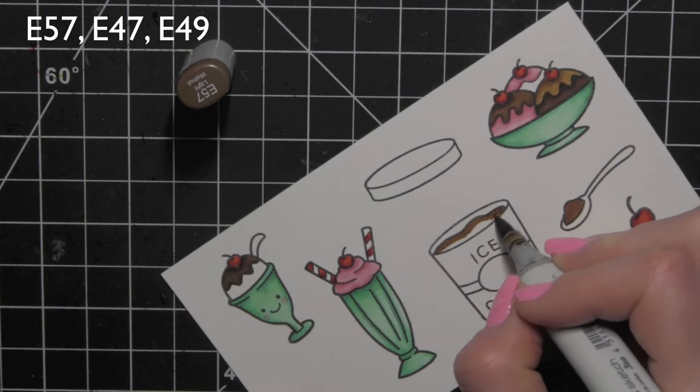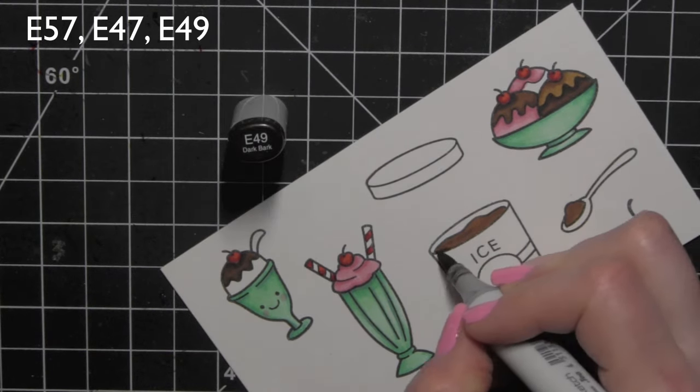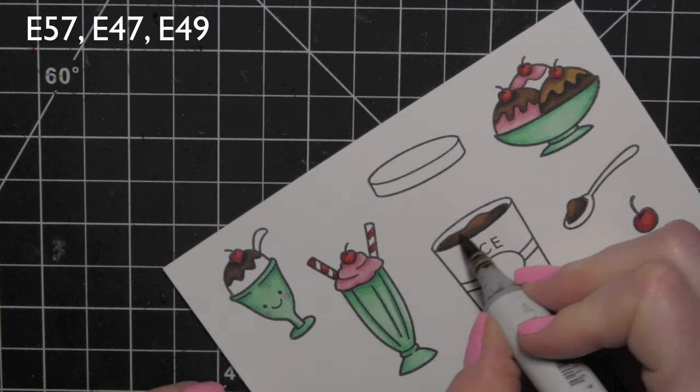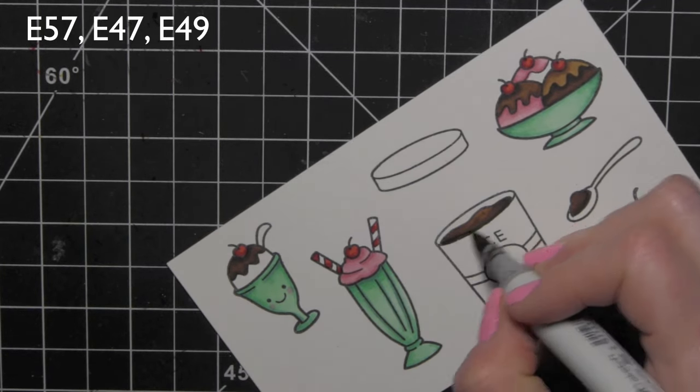I'm going to go back to my dark colors again and create some chocolate ice cream in the spoon and in the ice cream bucket from the Treat Yourself stamp set.